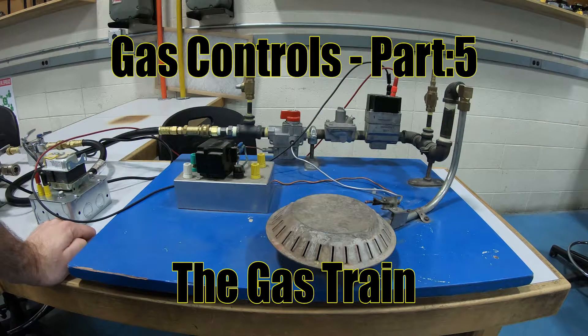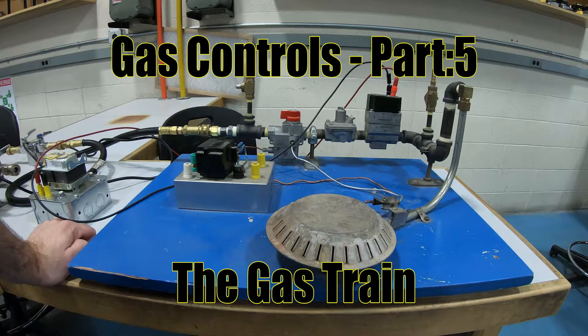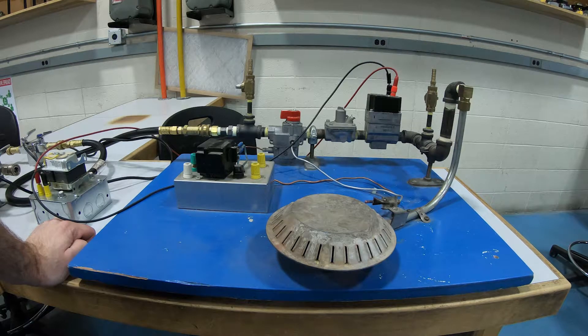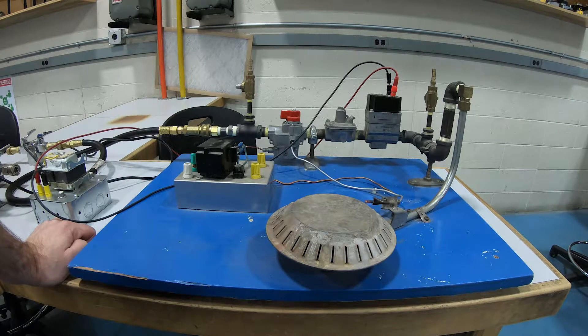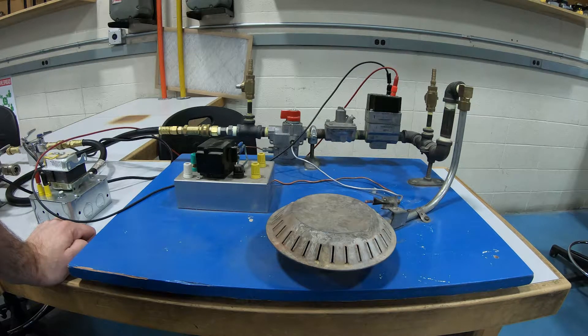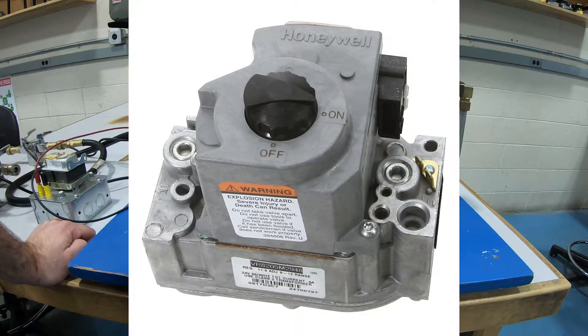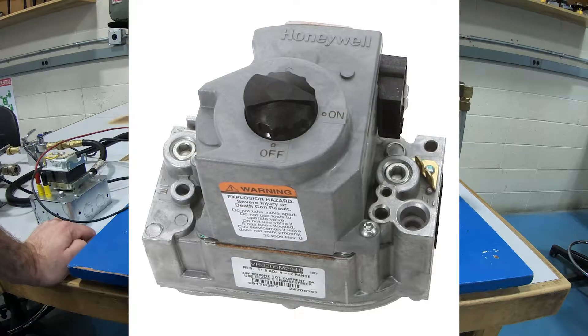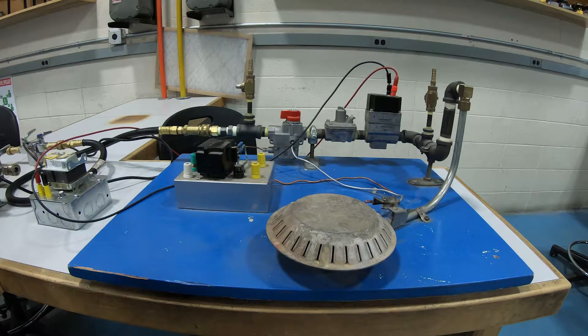Mathematic Plumber here and today let's talk about gas trains. Now a gas train is just a fancy way of talking about all the components that you would find in a gas burner system. Now typically we would see a gas train all combined in this little combination gas valve like this. But when we lay it out all in its components like older systems or large commercial systems, this is what it'll kind of look like.